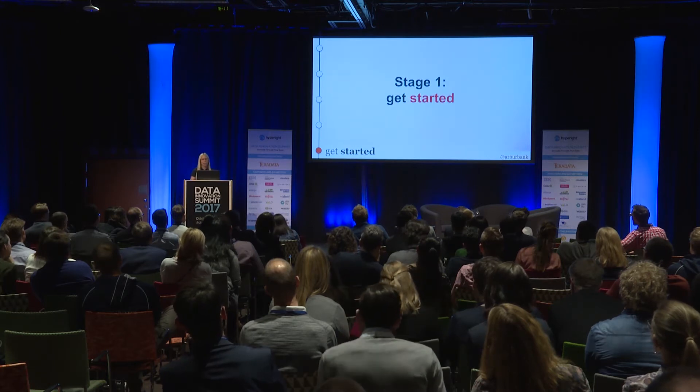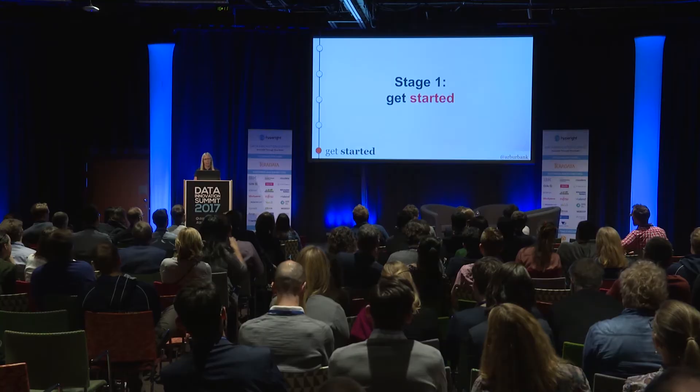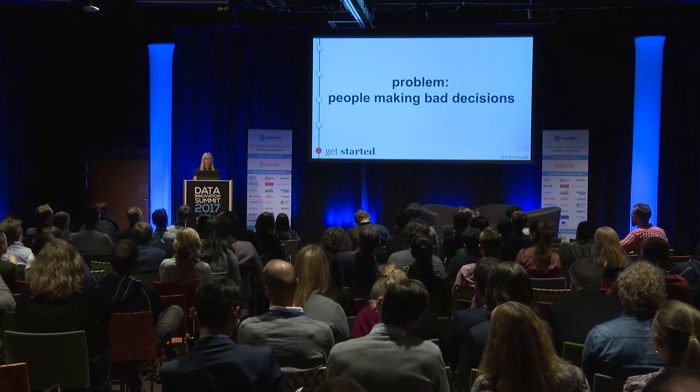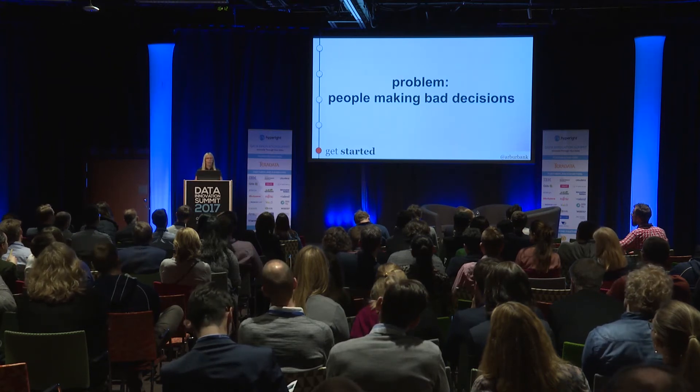Stage one is getting started. This is where you actually implement your A-B testing framework. The problem you're facing is people making bad decisions — maybe they're just shipping products without measuring them at all, or shipping them and watching what happens to the data without accounting for other things affecting those trends. At Pinterest, I joined in July 2012 and we decided to implement a new algorithm for categorizing our pins. We shipped it and saw our traffic plummet — but we didn't know if it was our categories algorithm or the fact that the Olympics had started last week.